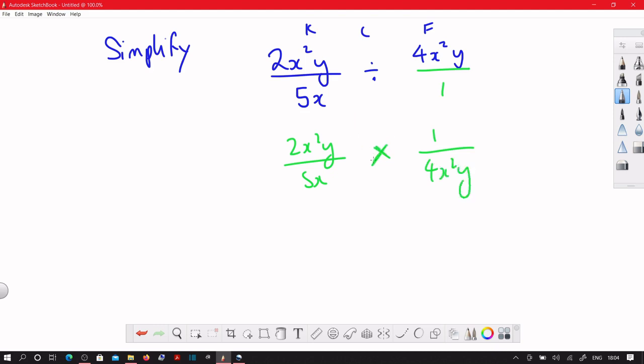Now, since we're multiplying fractions, it'll be numerator times numerator, denominator times denominator. 2x²y times 1. Well, first of all, 2 times 1 is still 2. And then you've got x²y. On the bottom, you've got 5 times 4, which is 20.